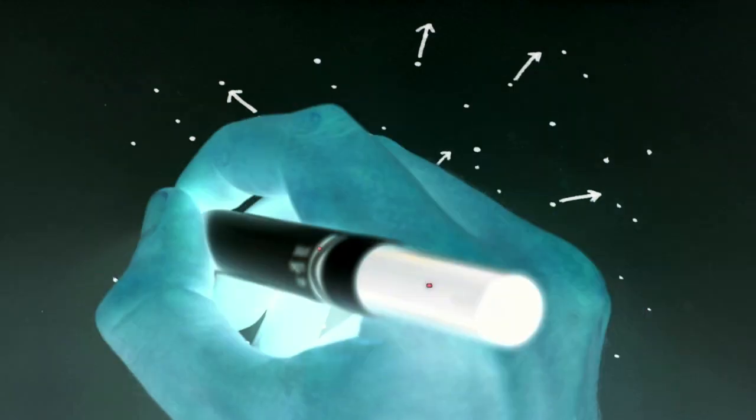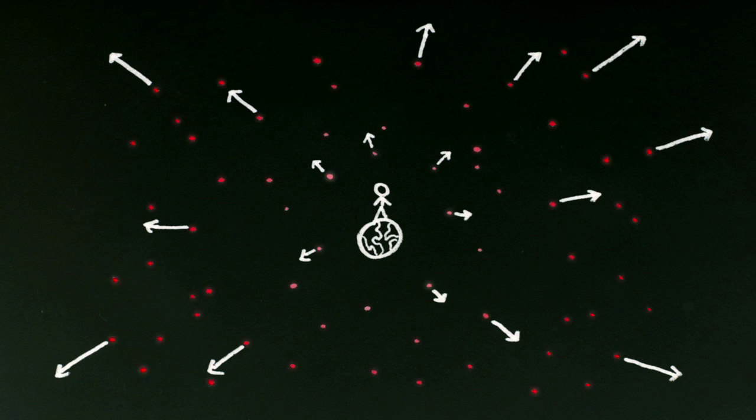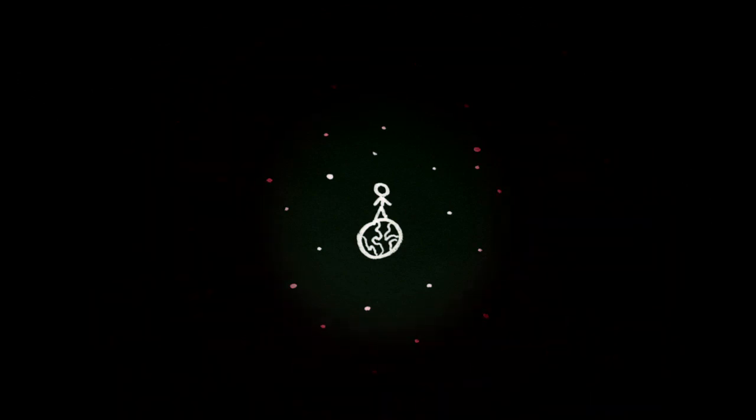And the farther away they are, the faster they move away from us and the redder they become, until they become infrared. And then we can't see them anymore. At least, not with our human eyes. And that's why the night sky appears dark.